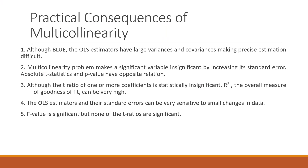The practical consequences of multicollinearity: although OLS estimators remain BLUE (best linear unbiased estimators), they have large variances and covariances, making precise estimation difficult. Multicollinearity makes a significant variable insignificant by increasing its standard error. Although the t-ratio of one or more coefficients may be statistically insignificant, R-squared — the overall measure of goodness of fit — can be very high. You get a good R-squared, but the p-values of the individual coefficients are not significant. The OLS estimators and standard errors can also be very sensitive to small changes in the data. F-value may be significant, but none of the t-ratios are significant.